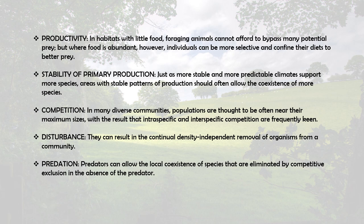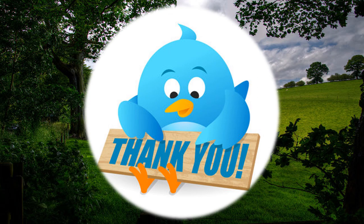The final factor is predation. Predators can allow the local coexistence of species that would be eliminated by competitive exclusion in the absence of the predator. By either selective or random removal of individual prey organisms, predators act as agents that reduce the level of competition among their prey. Because many predators prefer more abundant prey types, predation is often frequency-dependent, which promotes prey diversity. That is all for today — thank you.